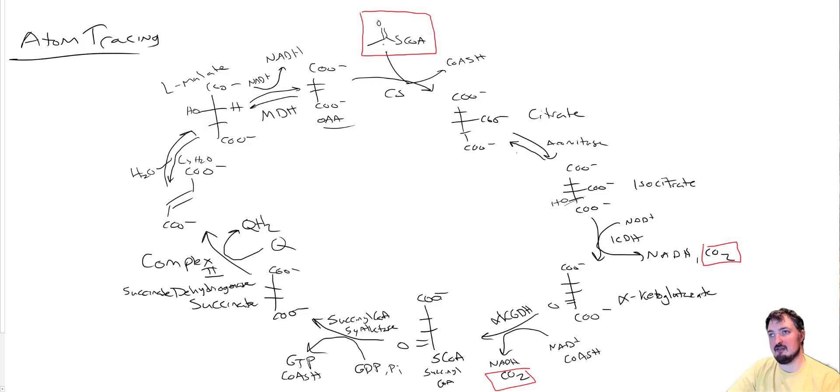Let's pretend that we have a carbon that's labeled here at carbon one of acetyl-CoA on the acetyl group. Remember that what happens is this top carbon ends up with it. That top carbon is the one by convention that we typically attach to it, and so we would label that here.